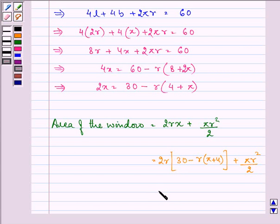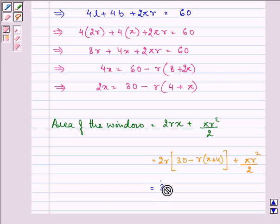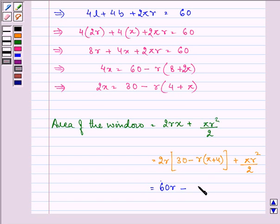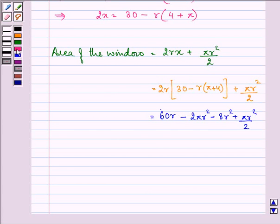Now, on simplifying it further, we have, it has, 60r minus 2 pi r square minus 8r square. This further gives us, 60r minus 8r square.